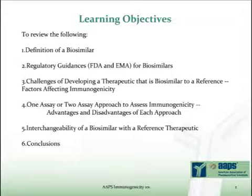The learning objectives of this eCourse are to: one, define a biosimilar and show how it differs from a Reference Innovator Therapeutic — I'll use the term Reference throughout this presentation to denote the original innovator drug. Two, understand the regulatory guidances that are in place for biosimilars. Three, discuss how factors that affect immunogenicity lead to a variety of challenges to developing a biosimilar therapeutic. Four, discuss the advantages and disadvantages of using one or two assays to assess immunogenicity during a development program for a biosimilar.